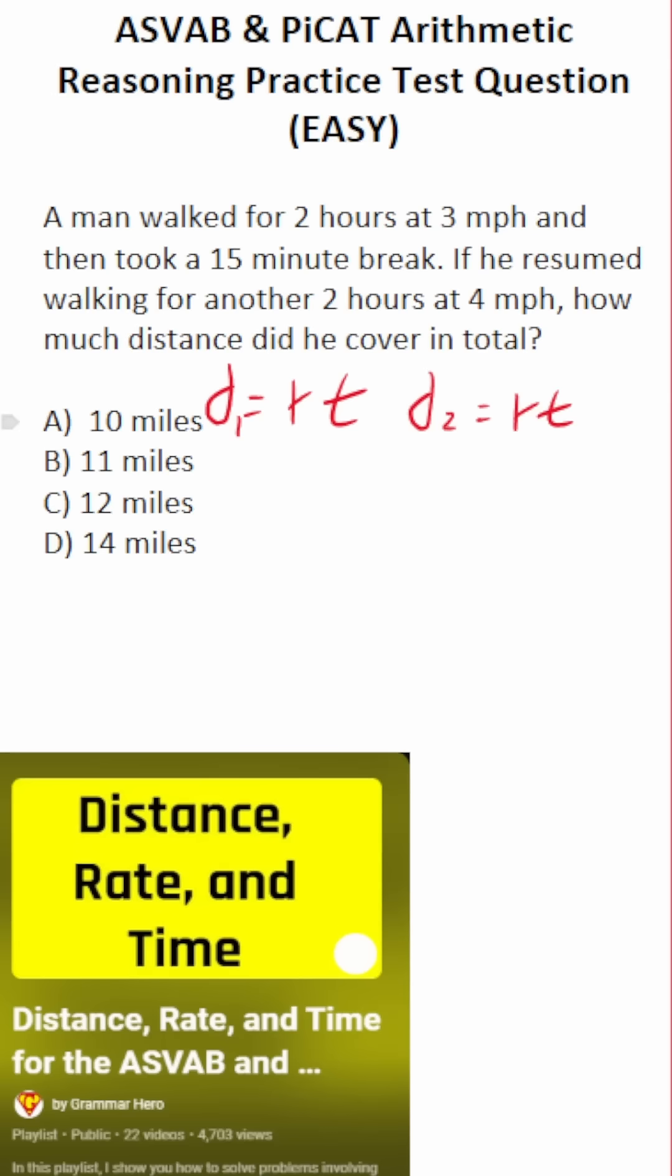So let's calculate the distance he walked before his break. He walked at a rate of three miles per hour for a total of two hours. So in total, he walked six miles before his break.